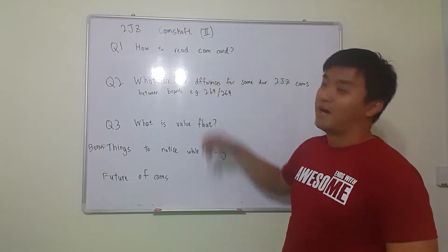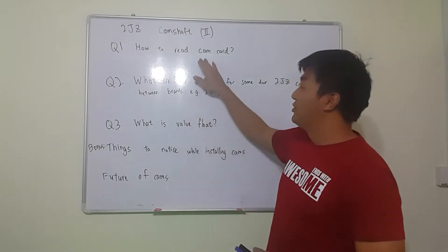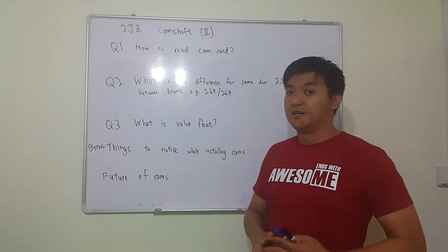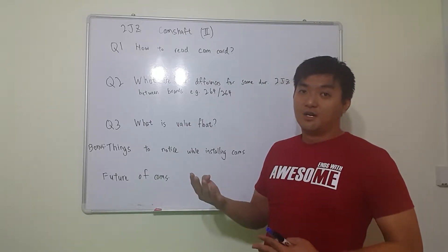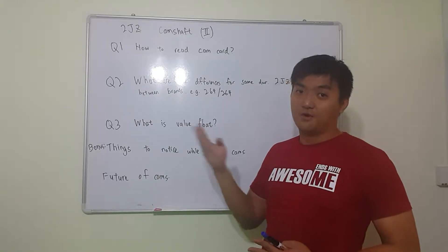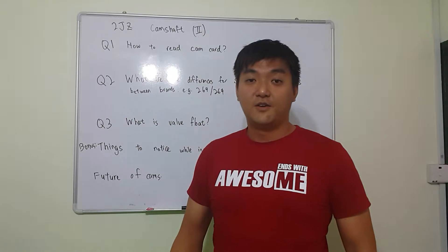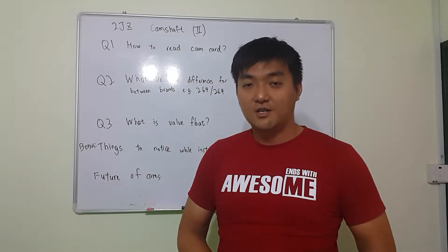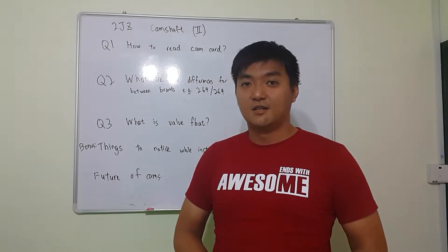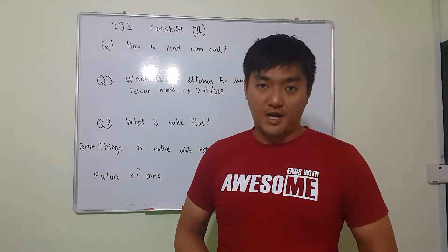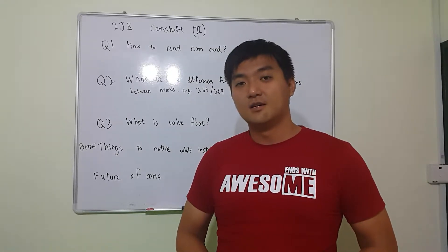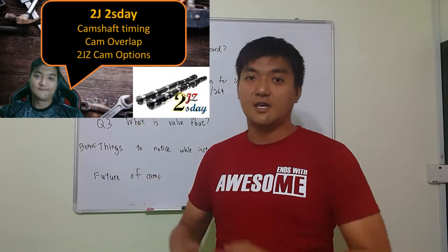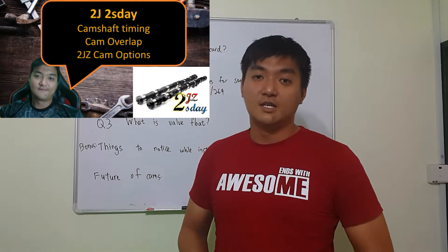Okay, so the first question is how to read a cam card. Before you know how to read a cam card, you need to understand three more things other than the things that I explained in the previous video. If you guys haven't watched, you can go ahead and watch, which will be displayed here. The previous video I talked about the camshaft timing, the basic terminology such as lift, duration, base circle. I also discussed what is camshaft overlap, and the third one is I discussed about the 2JZ cam options. So follow this link if you guys still haven't watched it and watch it before watching this video.